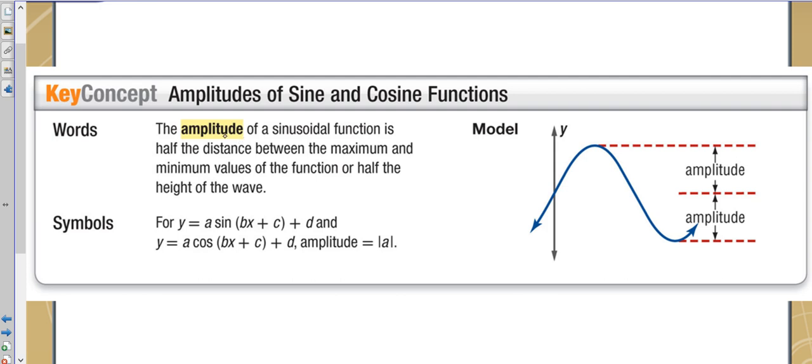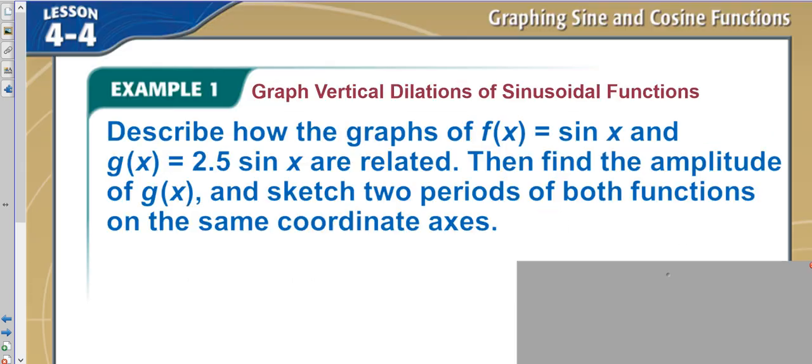Where you can find amplitude is this a value out here in the front. A is your amplitude. And this is just saying the absolute value, because if it's a negative number, it just means it goes down first, the wave, before it goes up. But it still would measure the same distance. So that's a key word there.